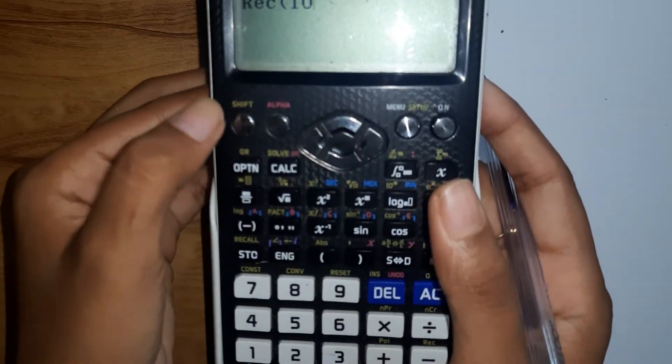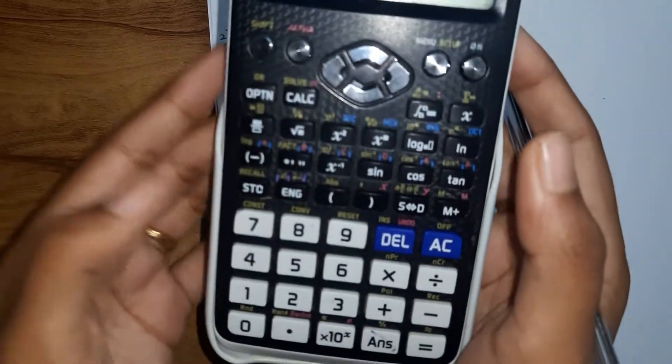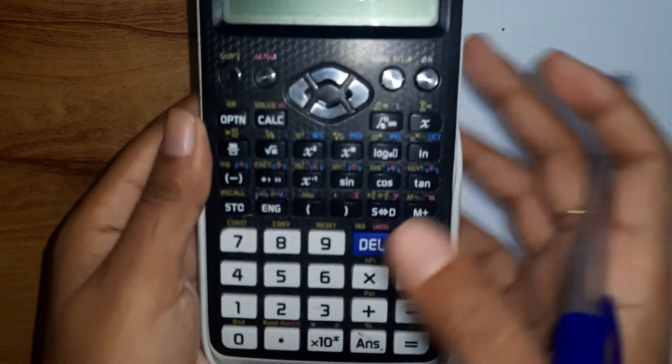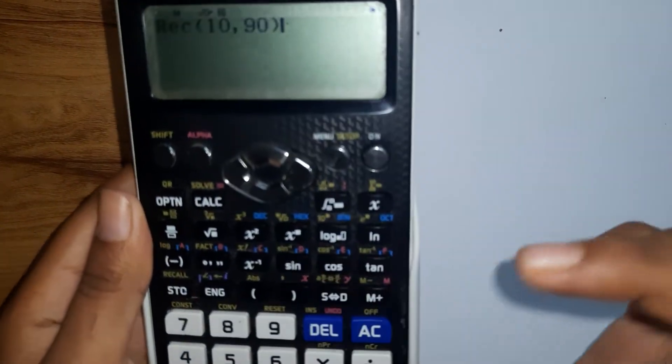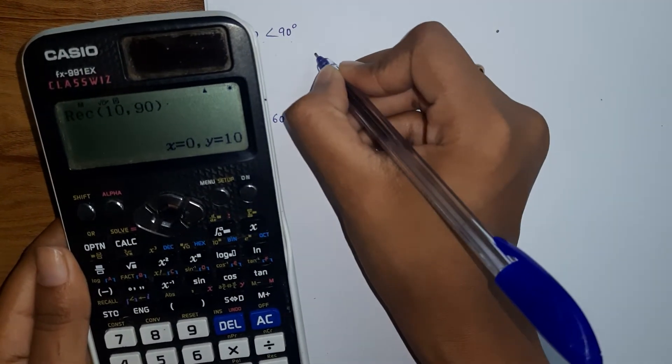So enter 10, and for comma you need shift, you got the comma here. And now here we have 90, so that is 90. There you go, and equals to. You got the answer.